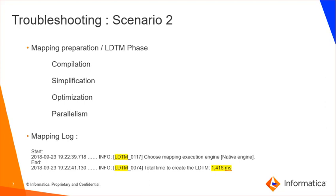Once the mapping is submitted to DIS by the client, DIS starts mapping preparation through various phases like compilation, simplification, and optimization, which helps in running the mapping more efficiently and utilizing resources effectively. It is possible that any of these preparation phases could lead to a performance issue. The snapshot of the log message indicates the start of LDTM, and at the end of this phase a message is logged specifying how much time it took. In between these two messages, you can see log messages associated with activities like compilation, simplification, and optimization.